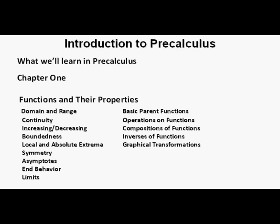We will review the concepts and applications of domain and range, continuity, increasing and decreasing functions, boundedness, local and absolute extrema, symmetry, asymptotes, end behavior, limits, the basic precalculus parent functions of which there are twelve, operations on functions, compositions of functions, inverses of functions, and graphical transformations. If you understand the vocabulary and applications in this chapter, you are well on your way to being successful in the class.